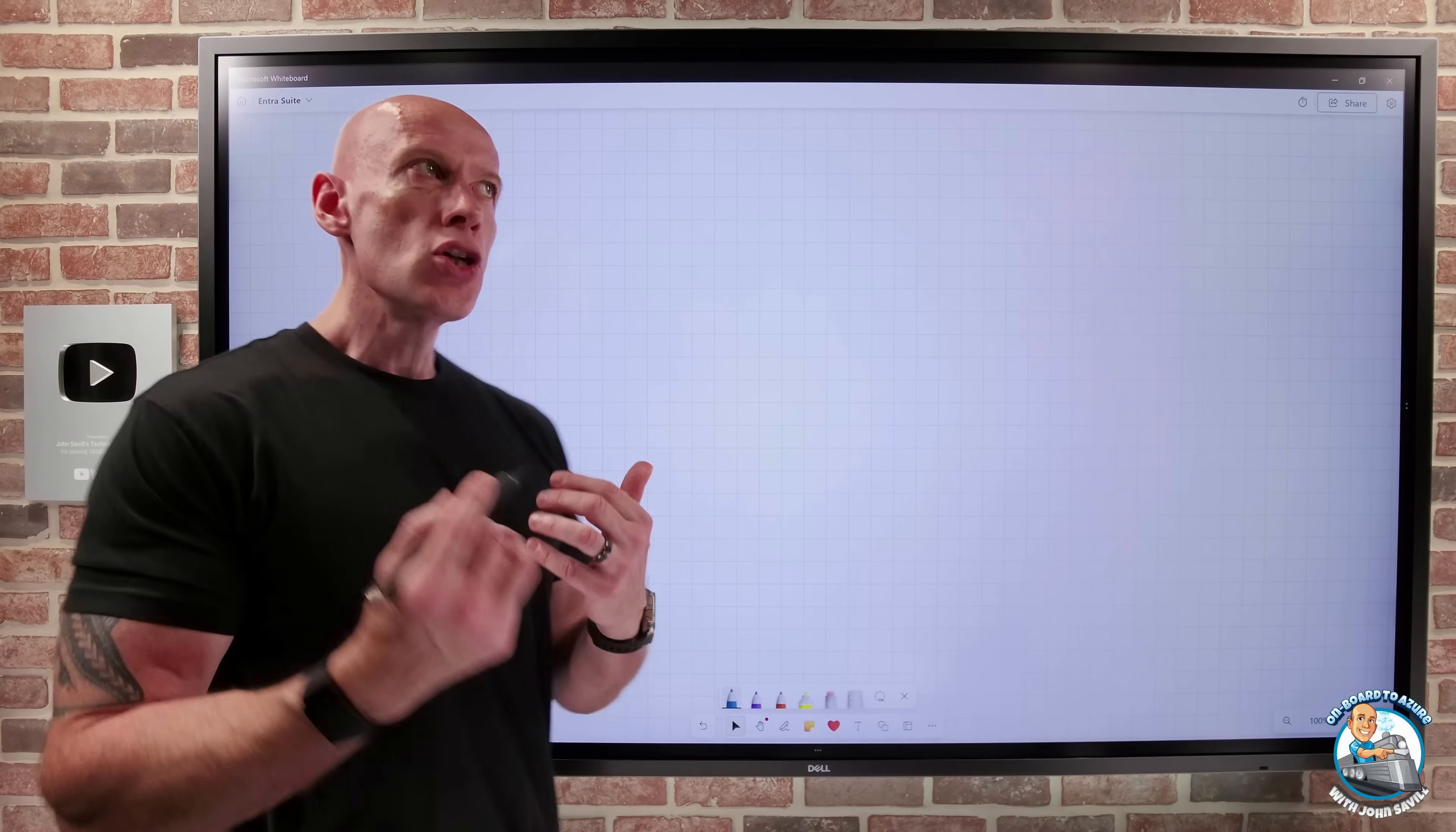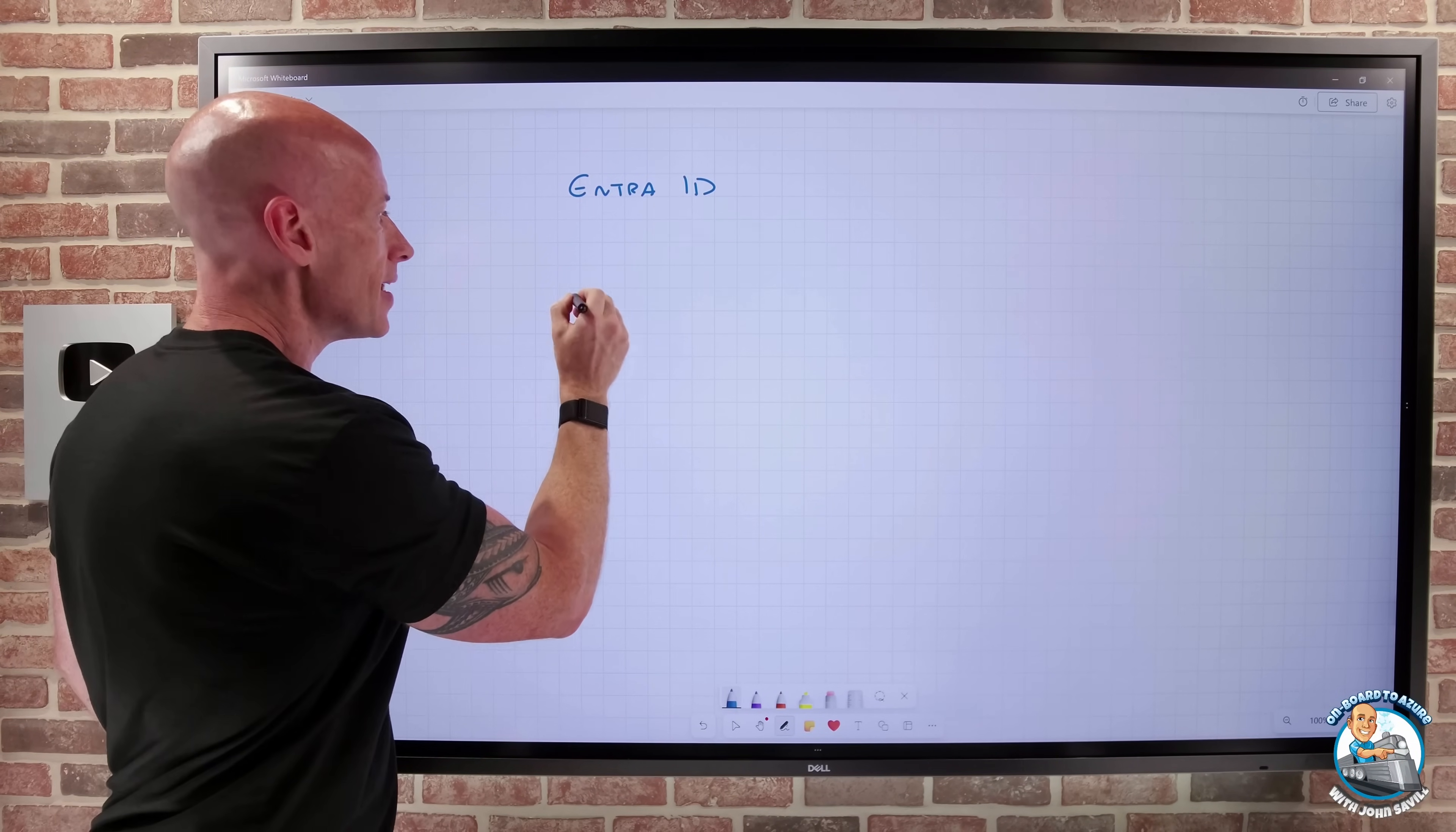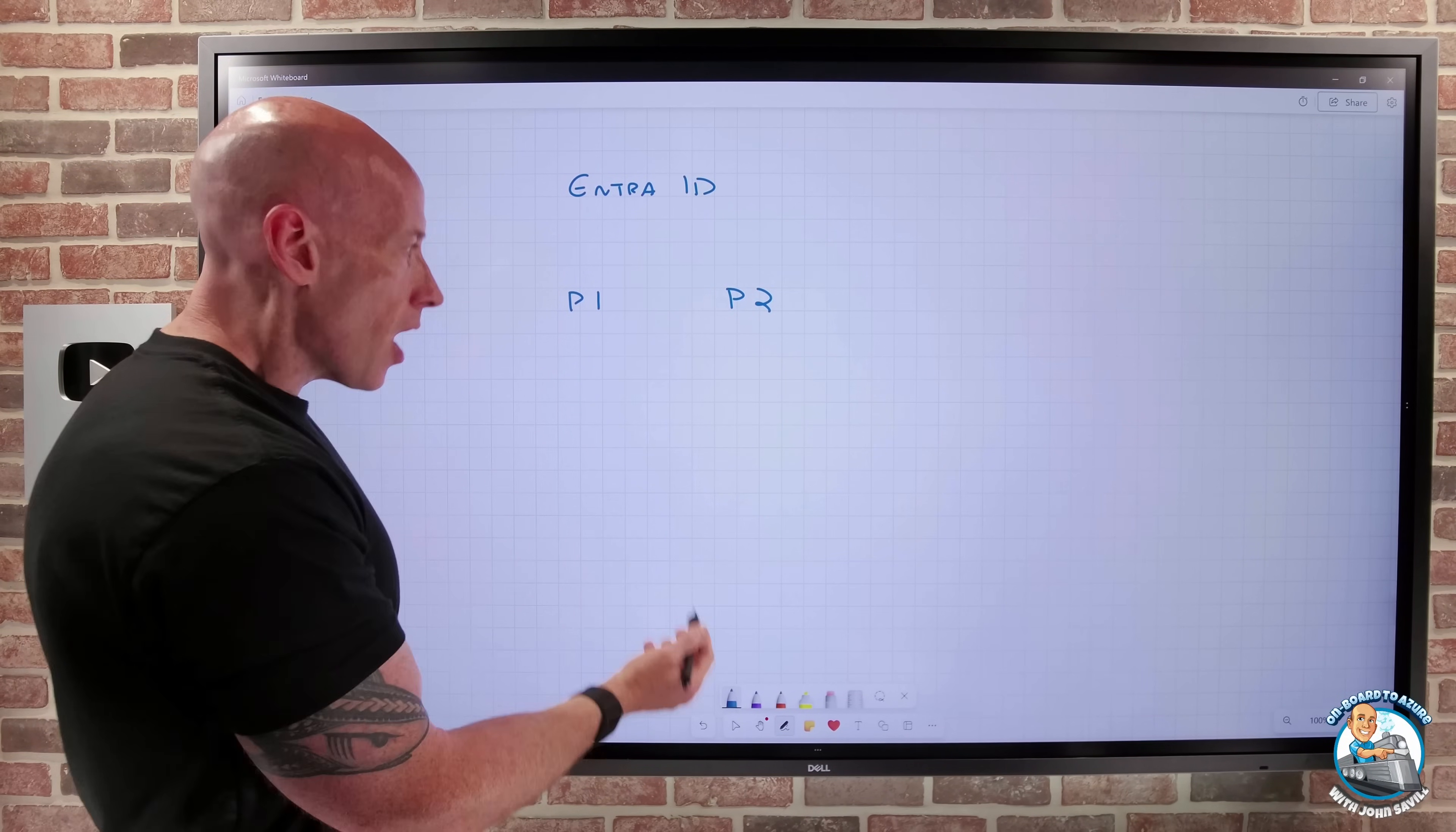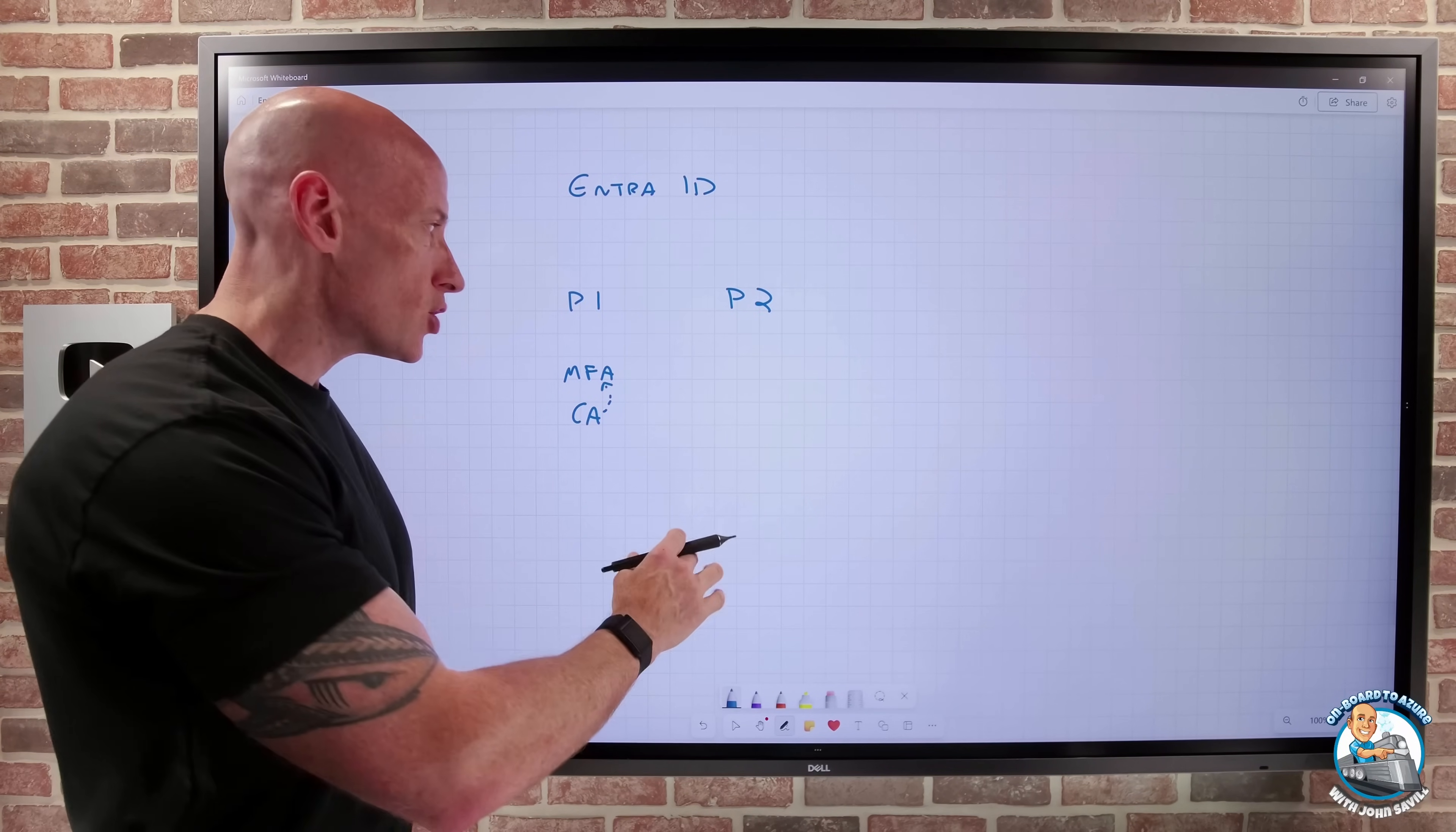Now most of us are used to the ENTRA ID P1 and P2. So I can think about from a SKU perspective, obviously there's the free with some base capabilities, and then I think about the P1 SKU and the P2 SKU. This starts to introduce the enterprise type technologies. I could think about for P1, obviously I get the ability for more flexible MFA, I get conditional access which I can then use to drive MFA, and there's a number of other features.